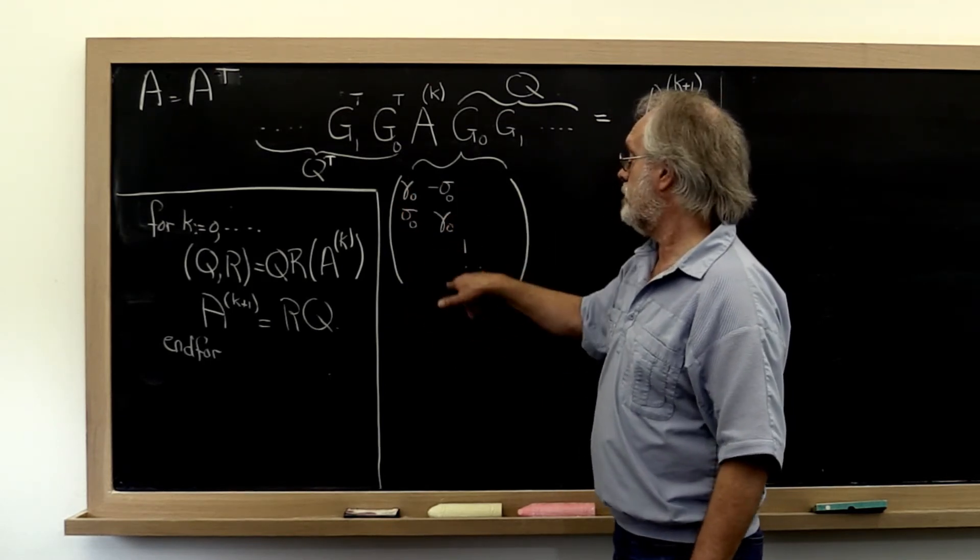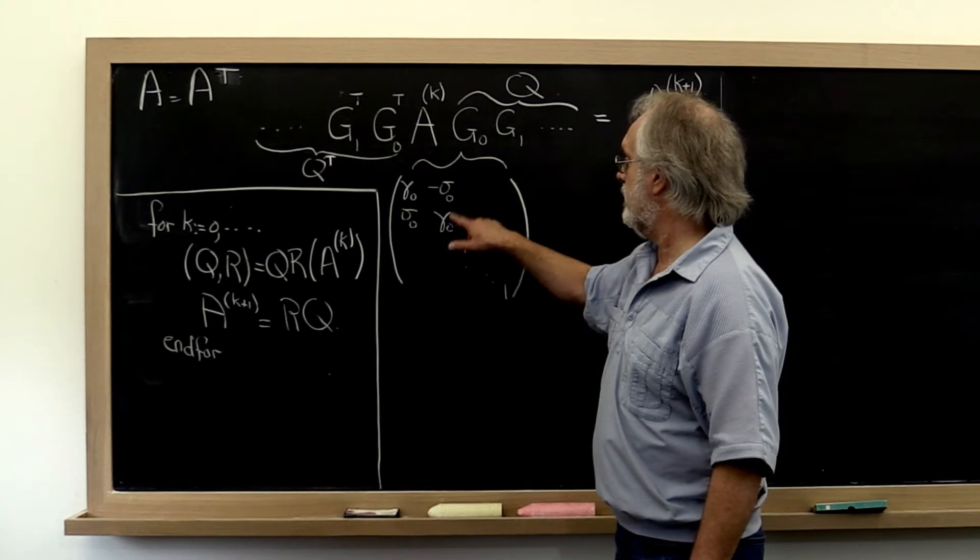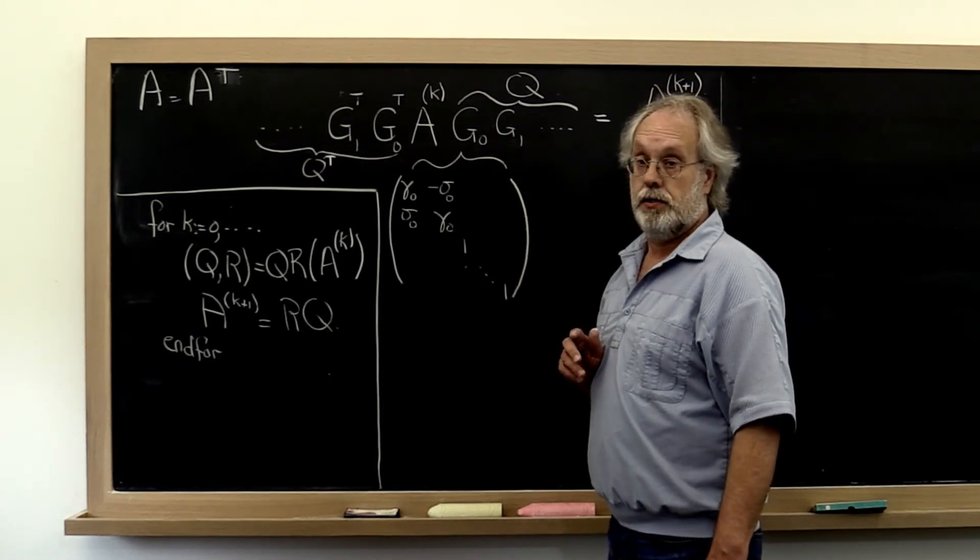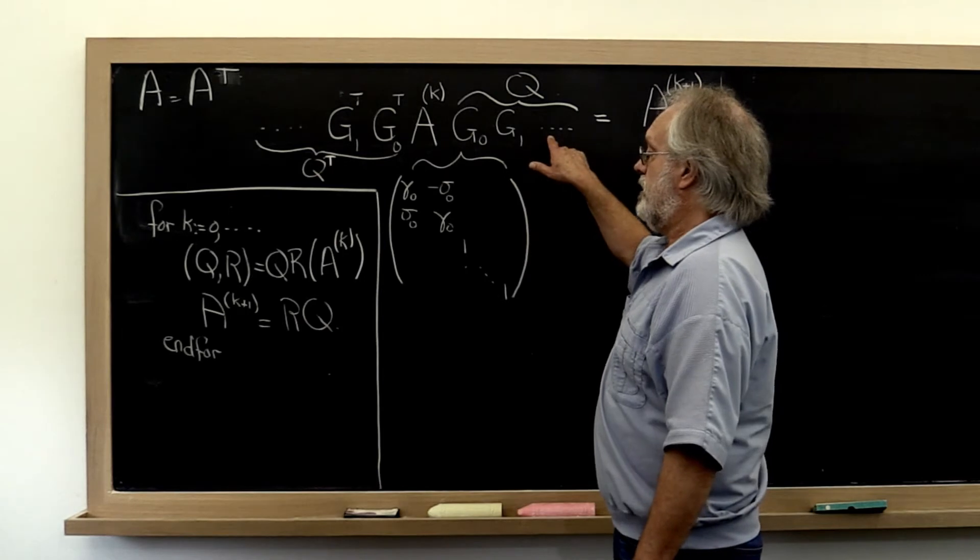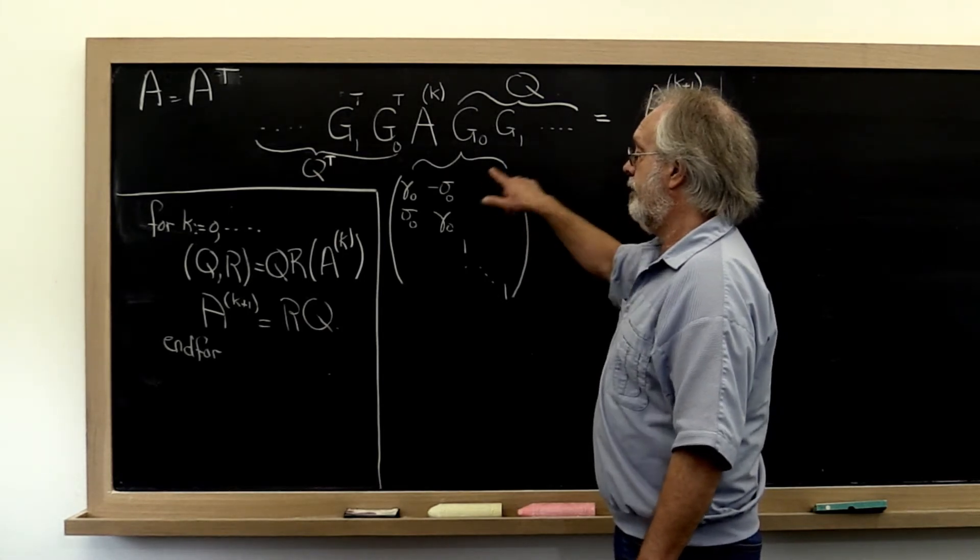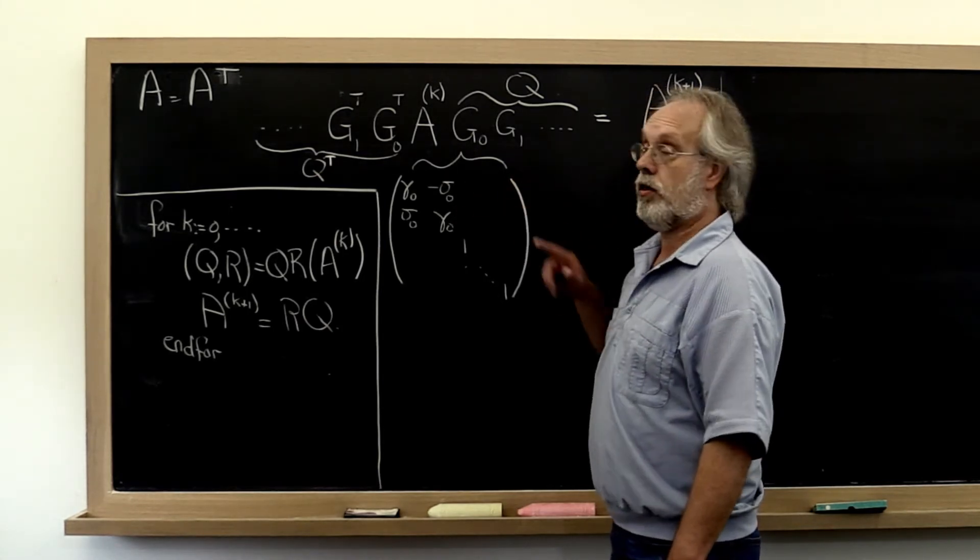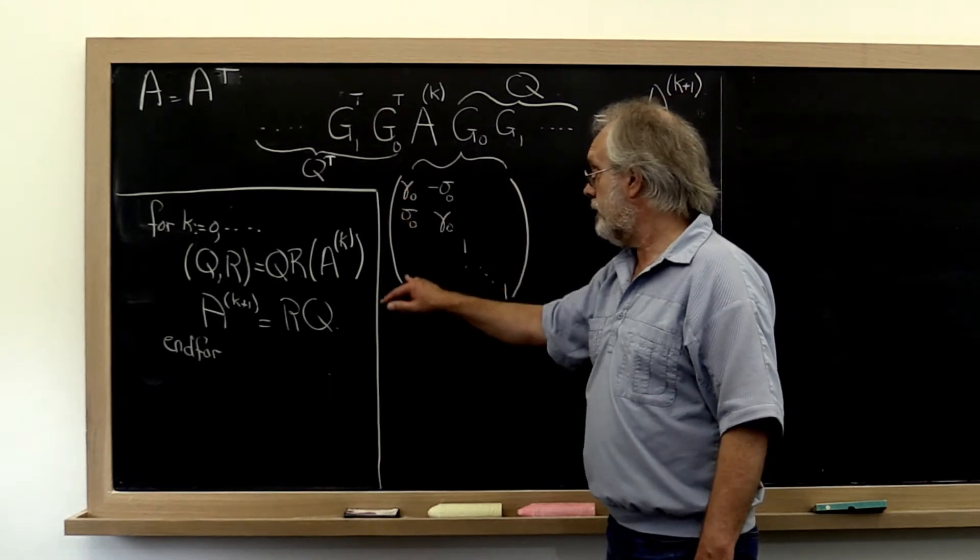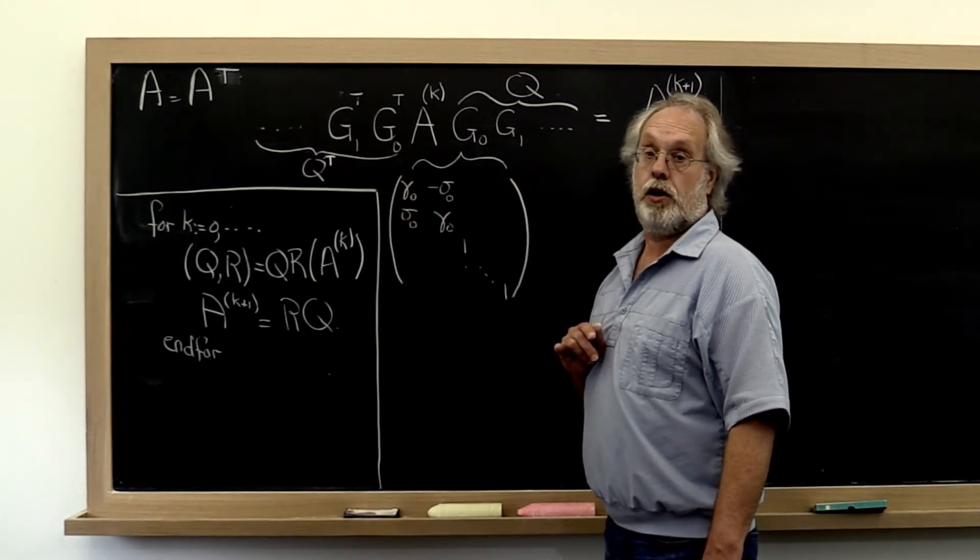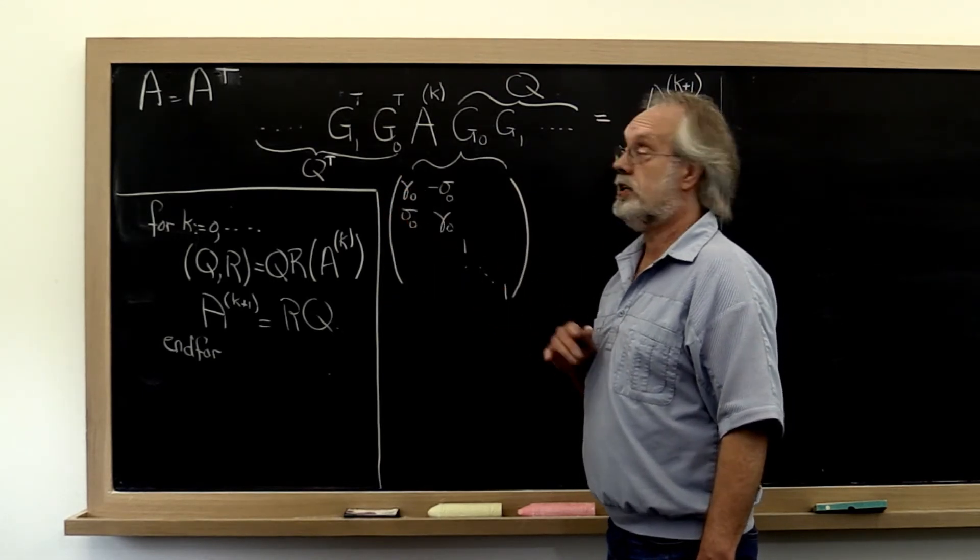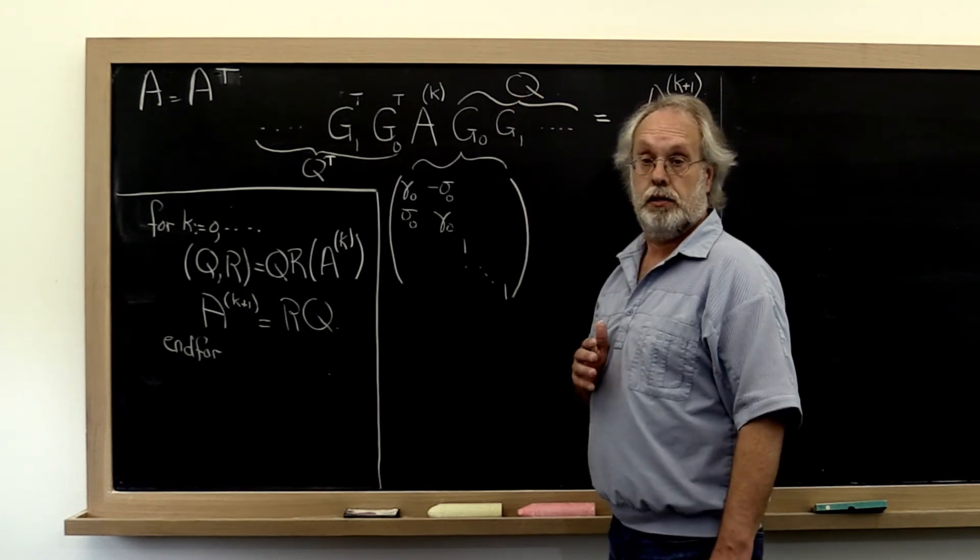So you get a bunch of non-zeroes here. As a matter of fact, you get a non-zero here, here, and here typically. Then you go to the next Givens rotation. It affects only the third and fourth column. It again leaves this first column of Q that we're trying to accumulate alone.